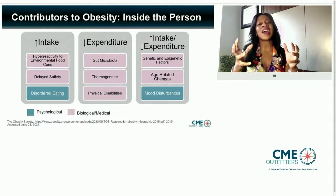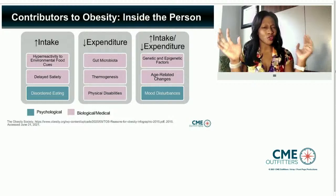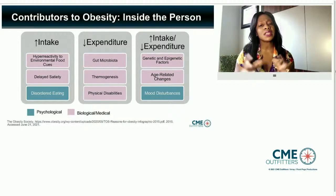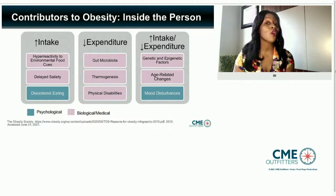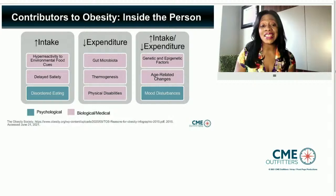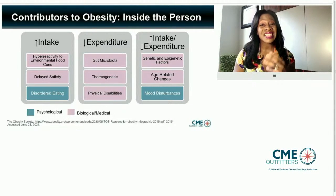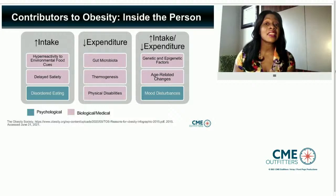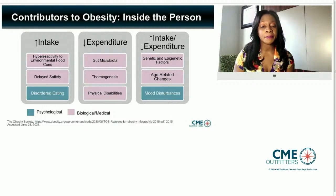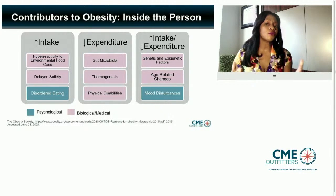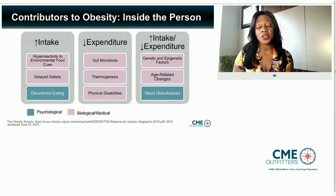Let's look at potential contributors to obesity inside of the person. Things that might increase intake are hyper-reactivity to environmental food cues — maybe you walk past a pizza place and really want it, while another person doesn't even notice. Also, delayed satiety and disordered eating. Things that may decrease expenditure include gut microbiota — lean individuals versus those with obesity differ drastically — thermogenesis, activity, and physical disabilities.